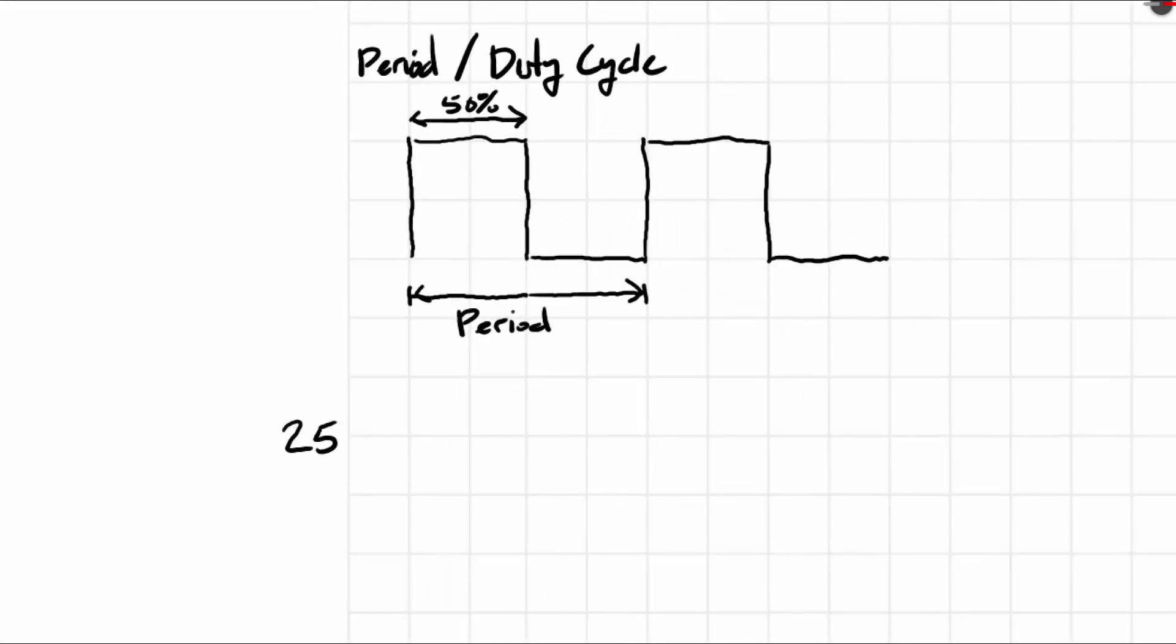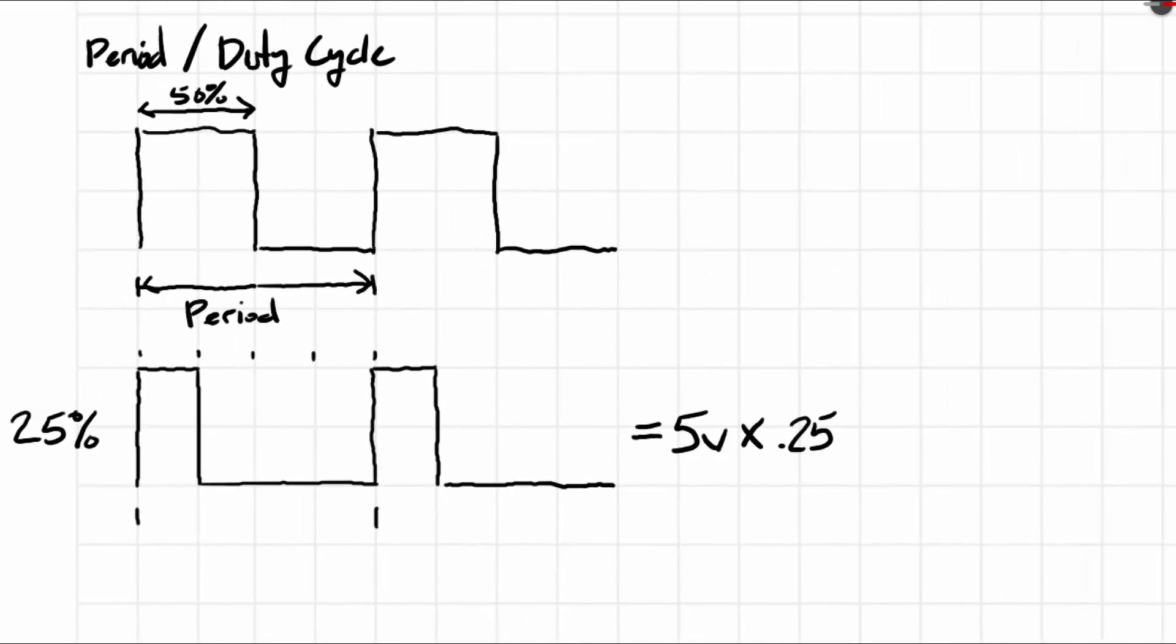Let's take a look at a couple duty cycles. For example, you'd have a 25% duty cycle if the width was 25% of the period. So if each of these graph lines, there would be four parts within 100% for 25%, and it would continue this way until you've changed the width of the pulse. So it would be 5V times 0.25, which is 25%, and that would equal 1.25V.